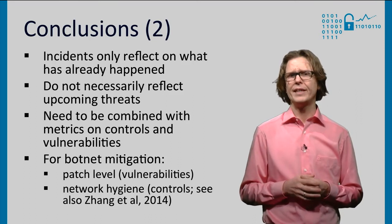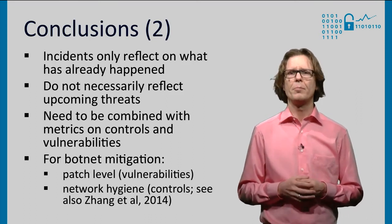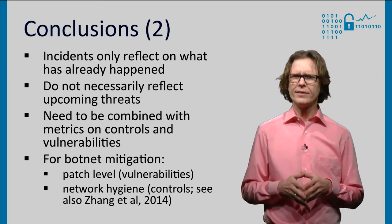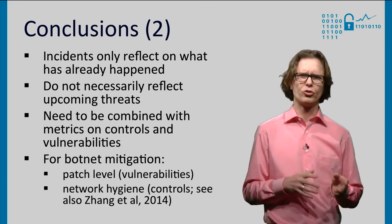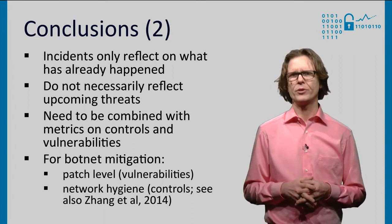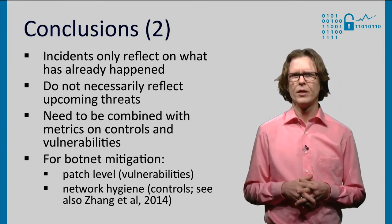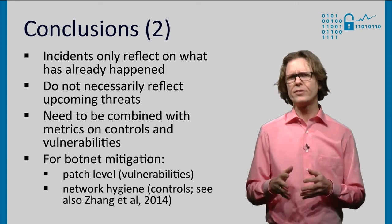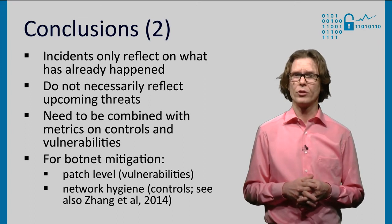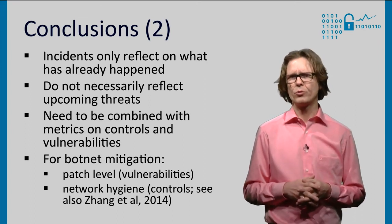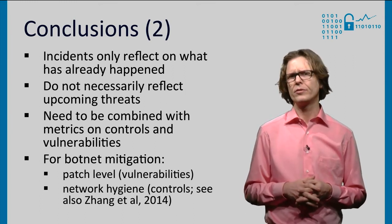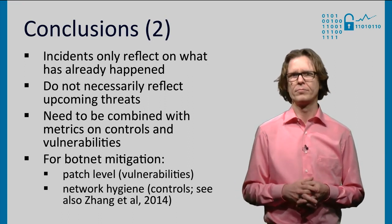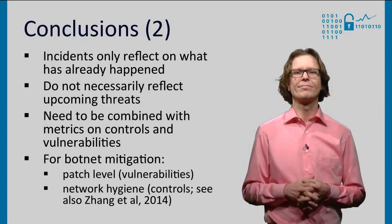It's also important to understand the limitations. Incident metrics are, by definition, based on past events — they express what has already happened. They do not necessarily tell you about what is to come. And this is why we also need the other types of metrics in the framework: those for controls and vulnerabilities. A combination of different metrics is the most powerful way to gauge security. To return one last time to our extended example: to understand the effectiveness of botnet mitigation, you could complement the incident metrics with metrics on the level of software patching across the network — vulnerabilities — and with metrics on network hygiene, that is, whether the appropriate configurations and controls are in place. In fact, a recent study found that these hygiene metrics are strong predictors of the actual infection rates. We will put the link on the course site if you are more interested in this.